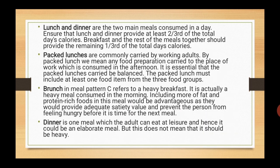Lunch and dinner are the two main meals consumed in a day — ensure these two provide at least two-thirds of the total day's calories, while breakfast and rest of the meals together should provide the remaining one-third. Packed lunches are commonly carried by working adults and must include at least one food item from each of the three food groups. Brunch is a heavy breakfast consumed in the morning, including more fat and protein rich foods — it provides adequate satiety value and prevents the person from feeling hungry before the next meal. Dinner is one meal which the adult can eat at leisure and could be an elaborate meal, but it should not be heavy.